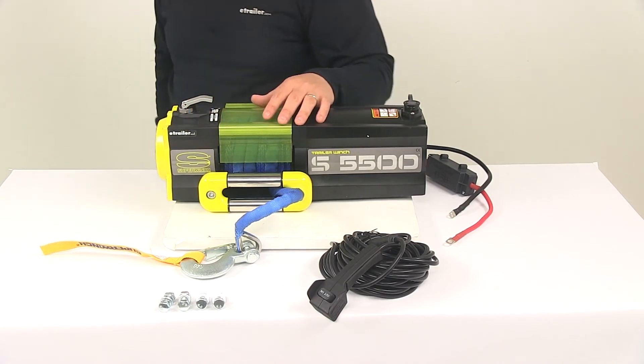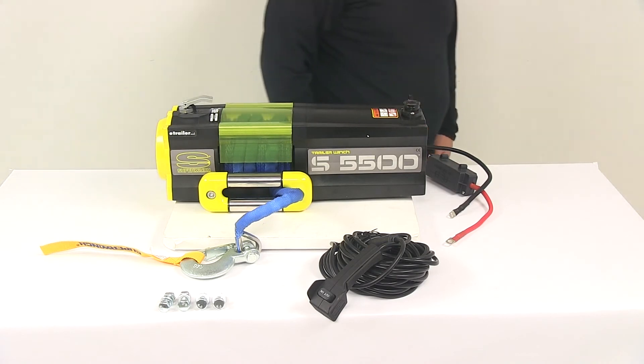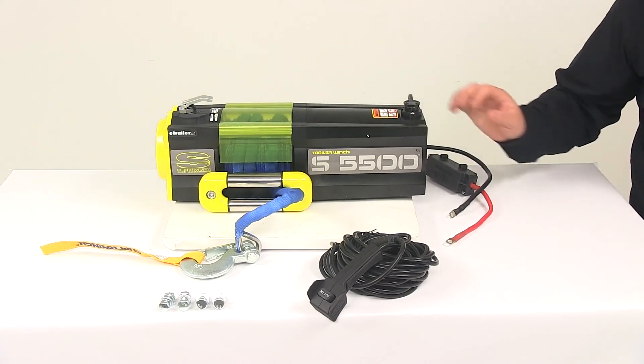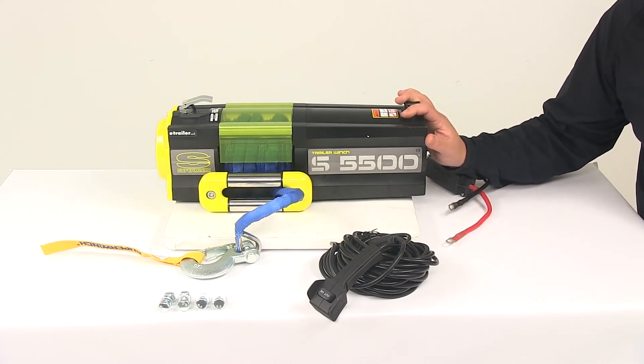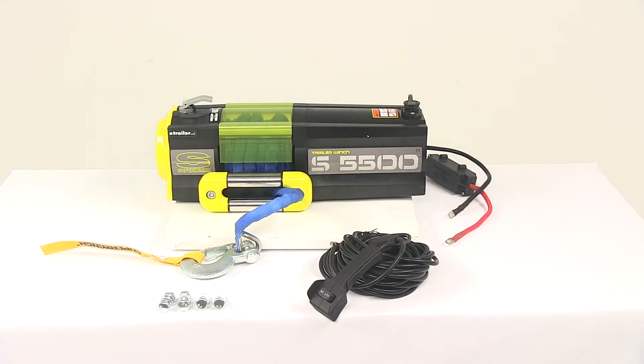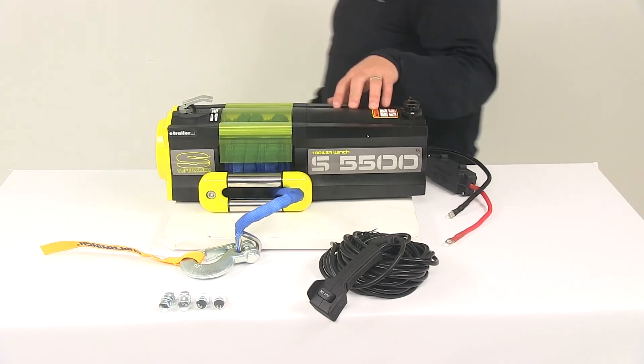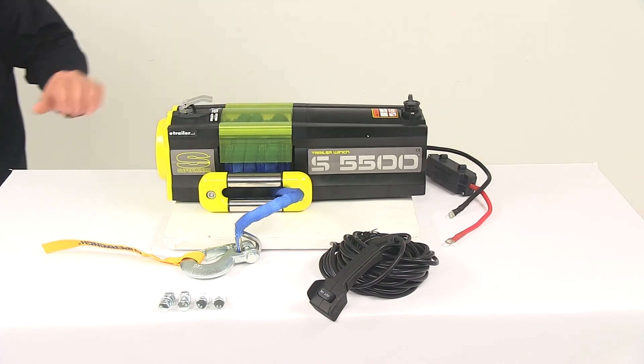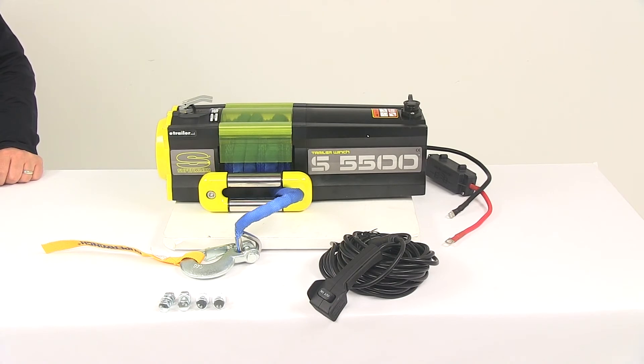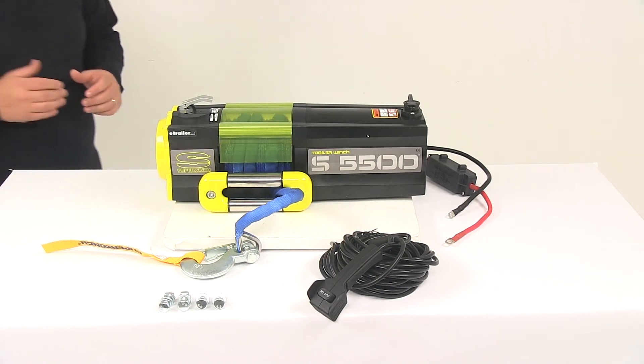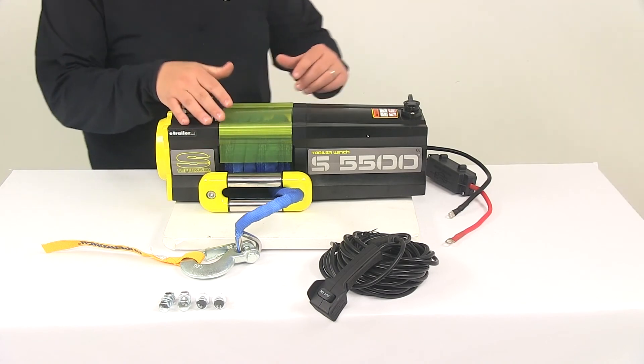This winch features a gear ratio of 185 to 1. It features a sealed solenoid that is circuit breaker protected. The braking on the system is an automatic load holding brake at 100 percent. The drum diameter is two and a half inches. The drum length is 4.87 inches. The weight of the winch with the synthetic rope installed is about 42 pounds.